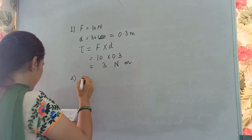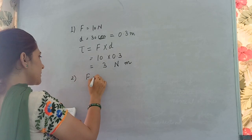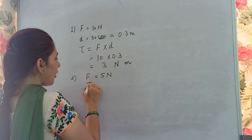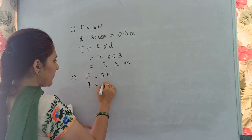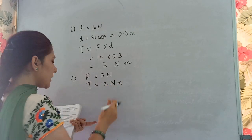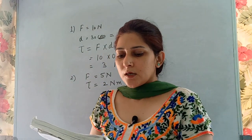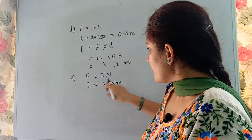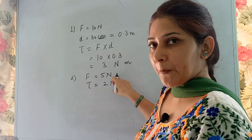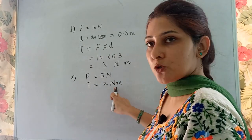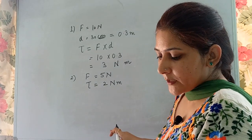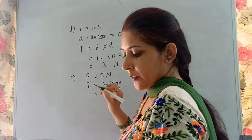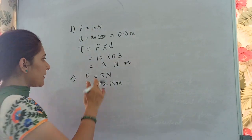The second example: a moment of force of 5 newtons about a point P is 2 newton meters. The torque due to this force about point P is given as 2 newton meters. The moment of force means the turning effect of a force. Force is 5 newtons and the turning effect is 2 newton meters. Calculate the distance of the point of application of force from point P.